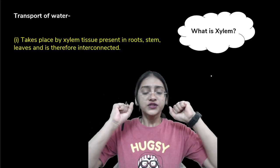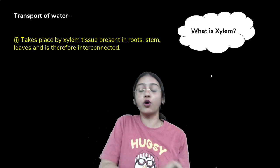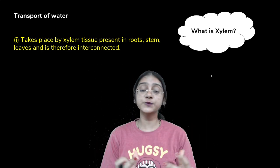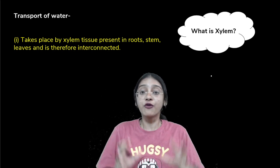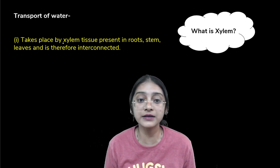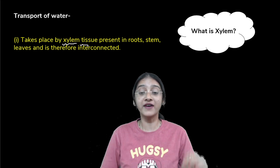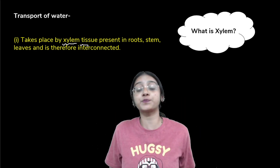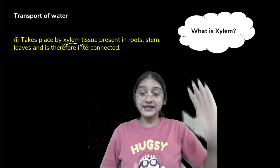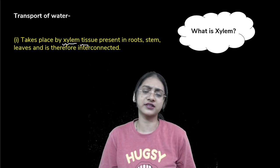First, let's understand how water is transported. In order to transport water to the top of the tree, we require a specialized tissue called xylem tissue. Transportation of water happens with the help of xylem tissue that is present in the roots, stems, and leaves, and these xylem tissues are interconnected to each other.